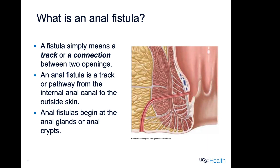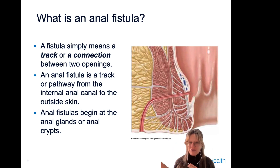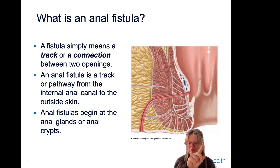A fistula track simply means a connection between two openings. An anal fistula is a track or a pathway from the internal anal canal to the outside of the skin. Inside the anal canal is a layer of glands that produce lubrication — they're called the anal glands or the anal crypts. You can see these little wavy figures in the picture; those are the anal glands, and that's exactly where the track is starting, tracking out to the outside of the body. Most fistulas are going to originate from that wavy glandular space in the anal canal.